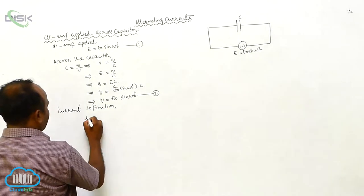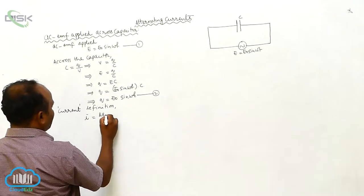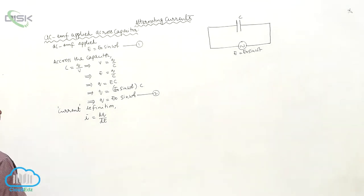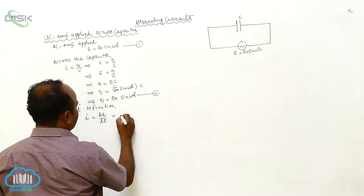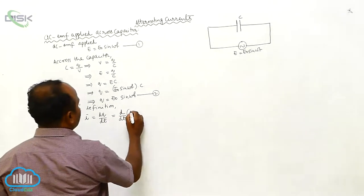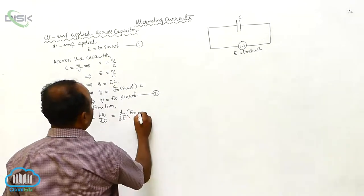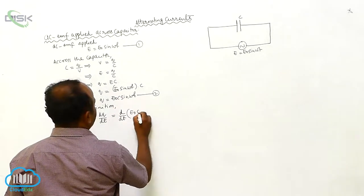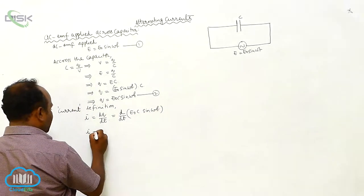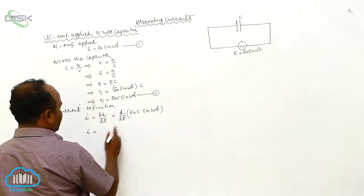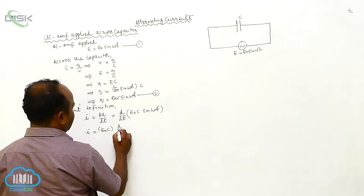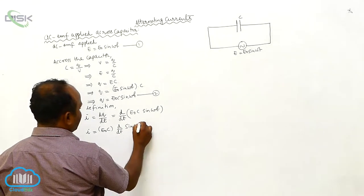Since i = dq/dt, and q = E₀C sin(ωt), therefore i equals d/dt of E₀C sin(ωt). E₀C remains constant, so we differentiate sin(ωt) with respect to t.